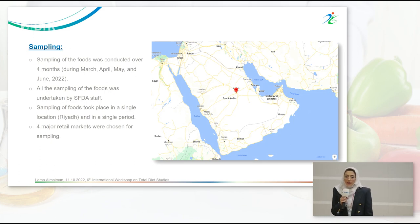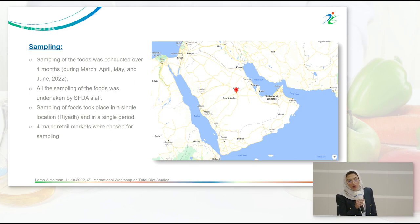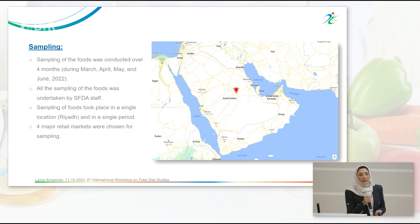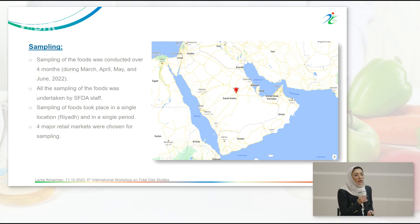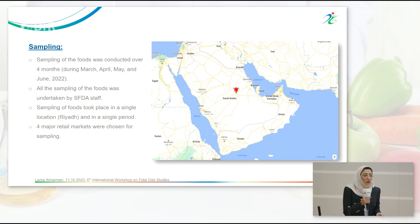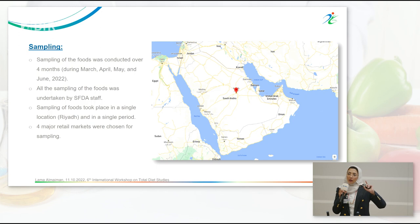Sampling of foods was conducted over a period of four months, covering only one season. All sampling was conducted by FDA staff — the team of the total diet study. Sampling took place only in one city, Riyadh, the capital of Saudi Arabia. Riyadh is the largest city in Saudi Arabia, with an estimated population of 8 million people, representing 27% of the total Saudi population. Four major retail markets were chosen for sampling, distributed around four regions in Riyadh: North, South, East, and West.